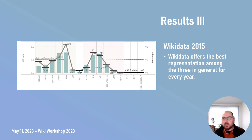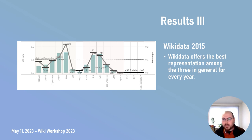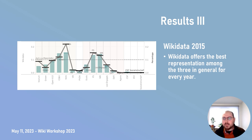The misrepresentation of political parties in DBpedia may be an artifact of how language, political systems, and data creation interact. While DBpedia extracts its information from Wikipedia, this can explain some issues — such as Dutch DBpedia having under-representation of Wallonian politicians. However, some of the over-representation found in the data is hard to explain and requires further analysis. We want to highlight that data analysis alone cannot explain biased representations, and more research is needed to understand the reasons behind them.